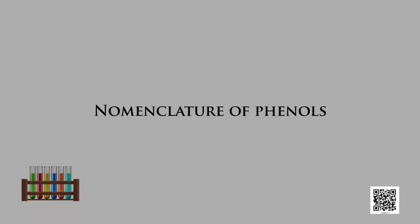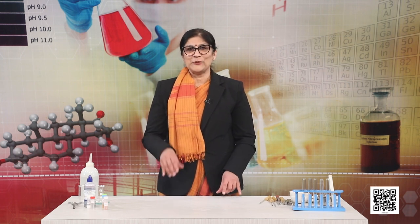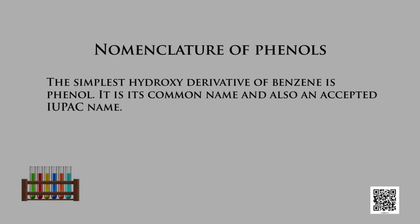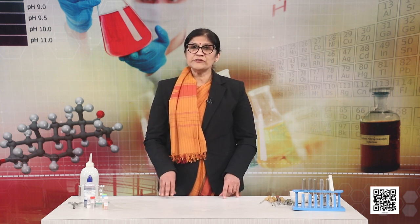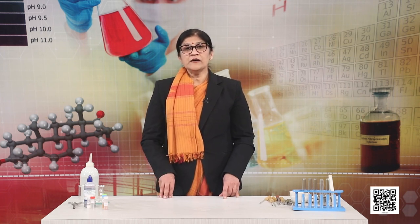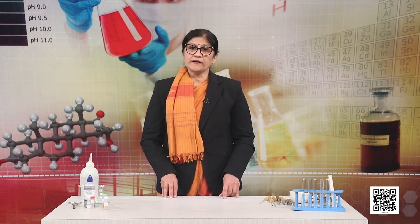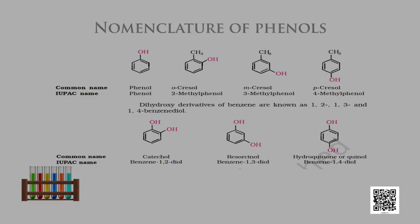Let us now study the nomenclature of phenols. The simplest hydroxy derivative of benzene is phenol — it is both its common name and an accepted IUPAC name. In substituted compounds involving a benzene ring, the terms ortho for 1,2-disubstituted, meta for 1,3-disubstituted, and para for 1,4-disubstituted are often used in common names.